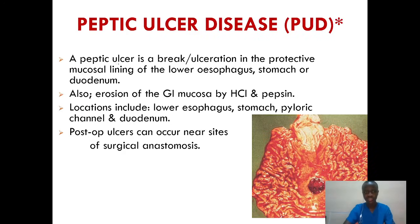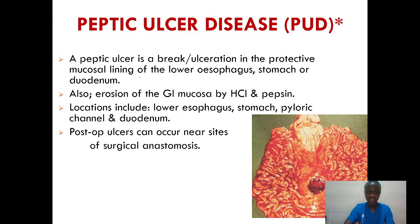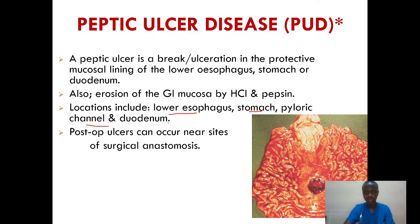Next, let's look at peptic ulcer disease. Peptic ulcer is always a break or ulceration in the protective mucosal lining of the lower esophagus, stomach, or duodenum. It can occur in various places like the lower esophagus, the stomach, H. pyloric channel, or in the duodenum. It's always key to remember the anatomy we've been learning.